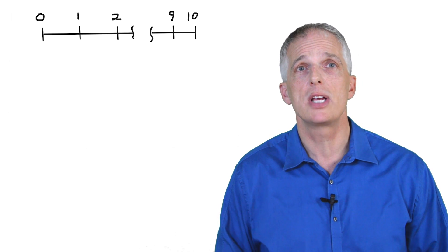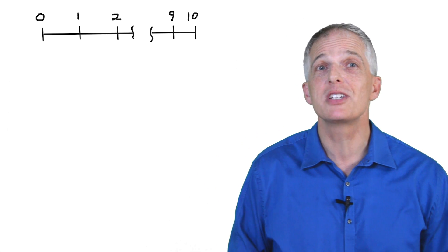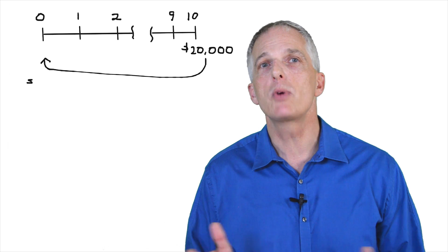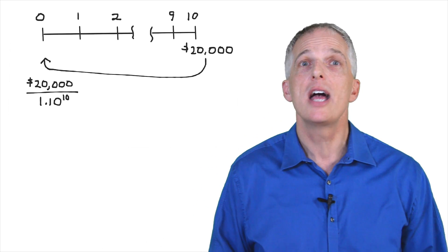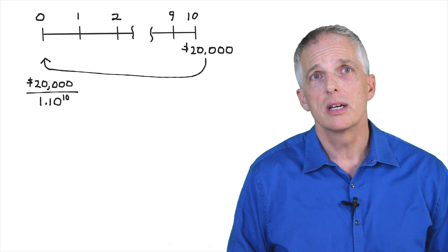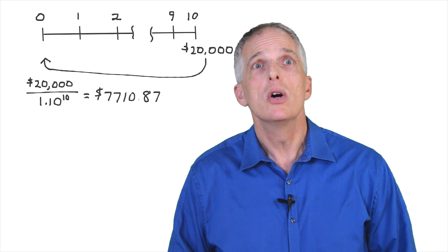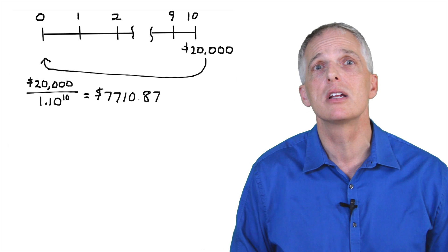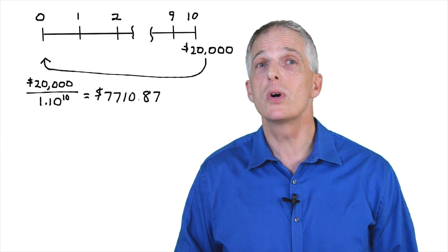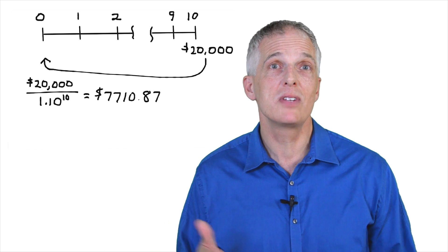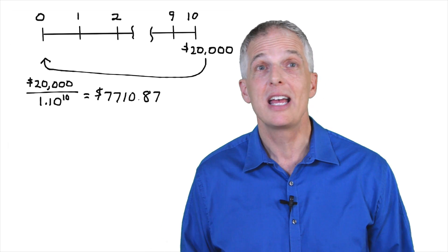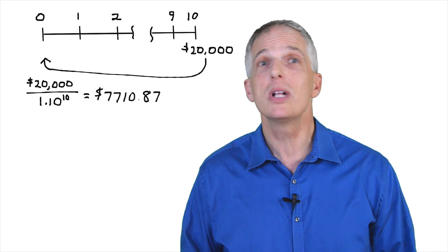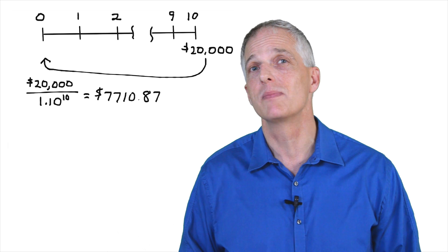I use hash marks to represent years and write the year above the timeline, but to save time I break the line in the middle where there are no cash flows. We would like to have $20,000 in 10 years, so let's put that on our timeline. We want to calculate the present value of the $20,000 at an interest rate of 10% over 10 years. Applying the basic present value formula, we find we need $7,710.87 in the bank today to meet our savings target of $20,000 in 10 years.